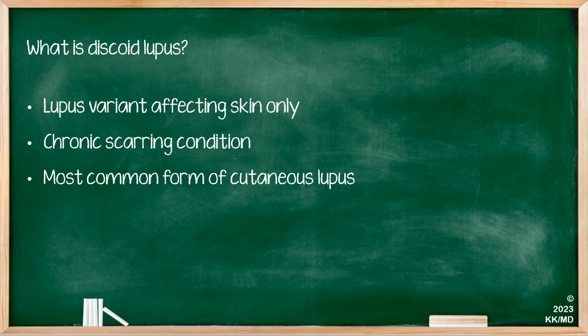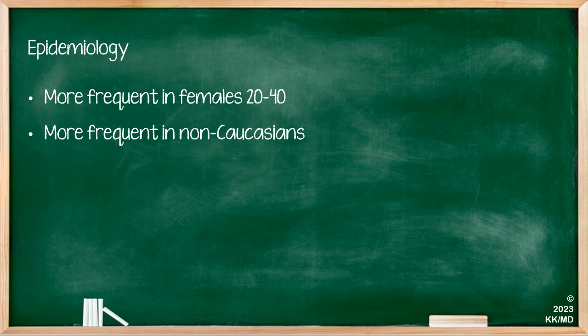So what is discoid lupus? This is a lupus variant that affects the skin only and it leads to chronic scarring. It's actually the most common form of cutaneous lupus. It's more frequent in females, as is the case for lupus more broadly, usually in those aged 20 to 40. It's also more frequent in non-Caucasians.